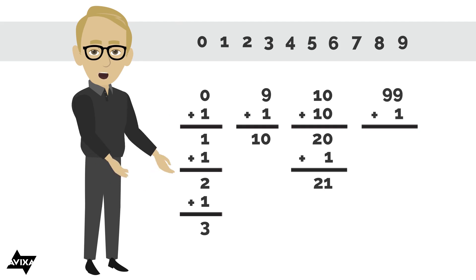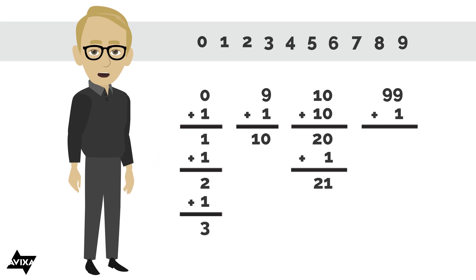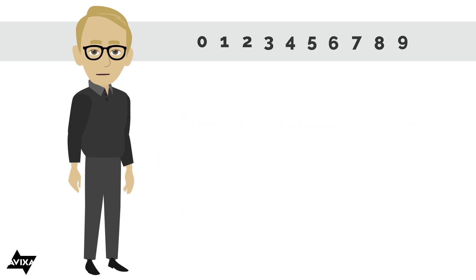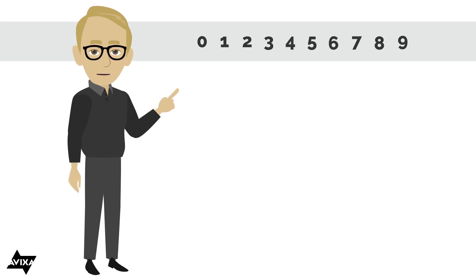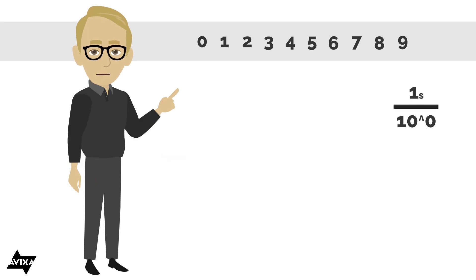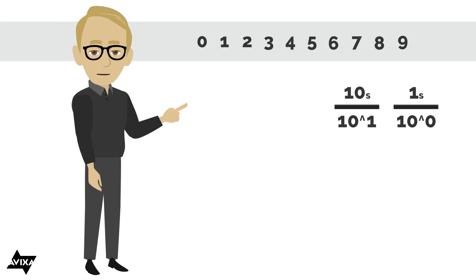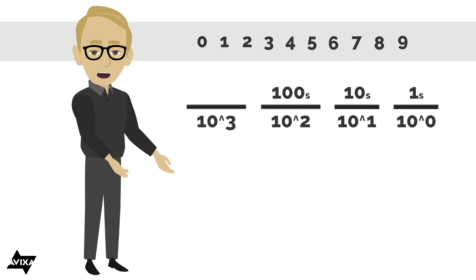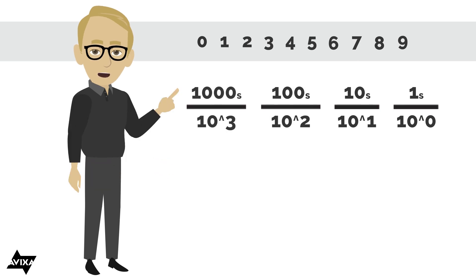That works until I try and add one more to 99. Again, I don't have any more symbols, so we add another place. Now we have 100, and we call this place the hundreds place. Another way to consider these places is we are multiplying by powers of the base, the base here being 10. So 10 to the power of 0 is 1 — that's the ones place. 10 to the power of 1 is 10, so that's the tens place. 10 to the power of 2 is 100, so that's the hundreds place. And 10 to the power of 3 is 1000, and that's the thousands place.